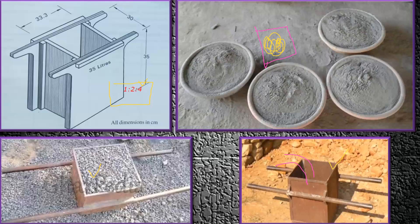Some people, instead of using firma boxes, use a pan or a bucket for measurement. For a mix of 1:2:4, they might take 4 pans of cement, 8 pans of sand, and 12 pans of coarse aggregate — maintaining the same ratio. Each contractor may have their own instrument for this purpose.